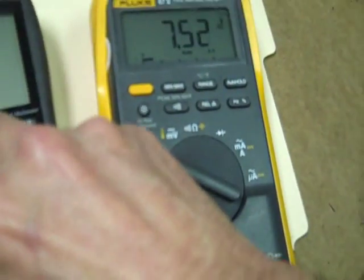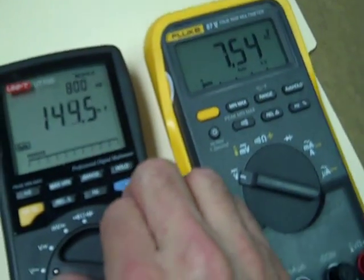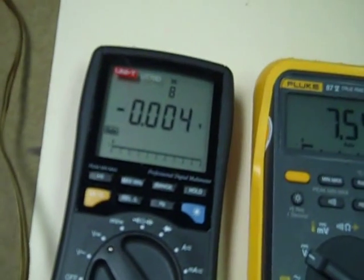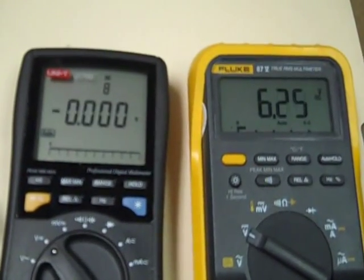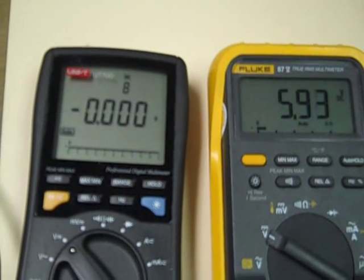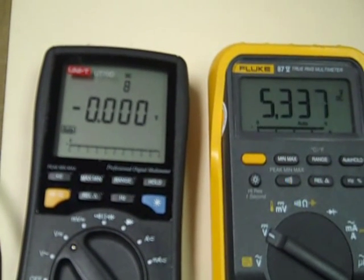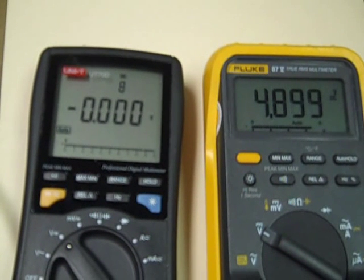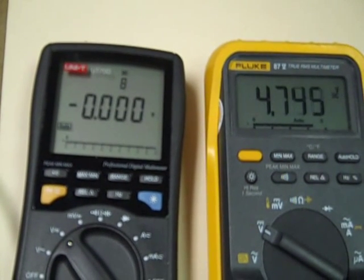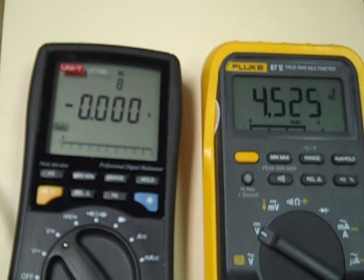There we go. And let's take the voltage down a little quicker. 6.2, 6, 5, 5.6, 5.4, less than 5 volts that time, 4.5.